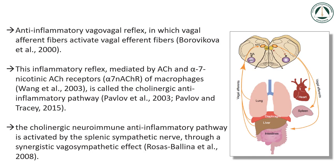An anti-inflammatory vagovagal reflex, in which vagal afferent fibers activate vagal efferent fibers (Borovicova et al., 2000), is mediated by ACh and alpha-7 nicotinic ACh receptors of macrophages (Wang et al.), and is called the cholinergic anti-inflammatory pathway (Pavlov et al., 2003; Pavlov and Tracy, 2015). The cholinergic neuroimmune anti-inflammatory pathway is activated by the splenic sympathetic nerve through a synergistic vagosympathetic effect (Rosas-Balena et al., 2008).